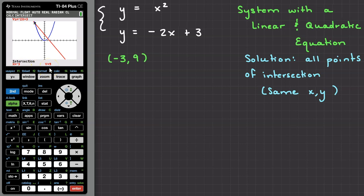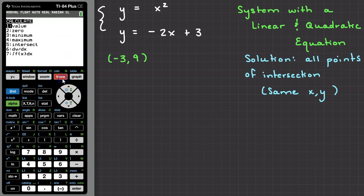But there is a second solution to the system. Let's follow the same steps to find the second solution. Hit second, trace, select option 5, intersect,